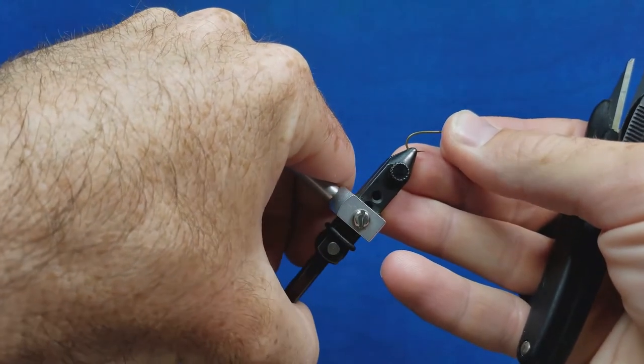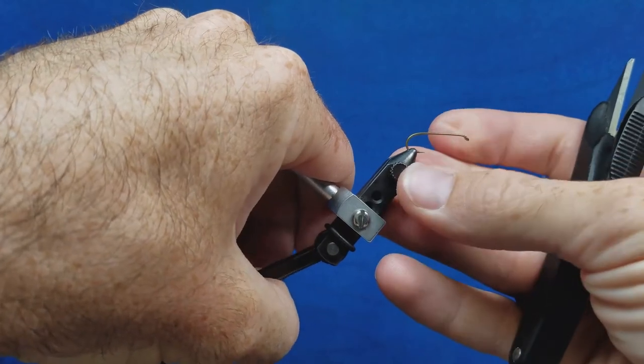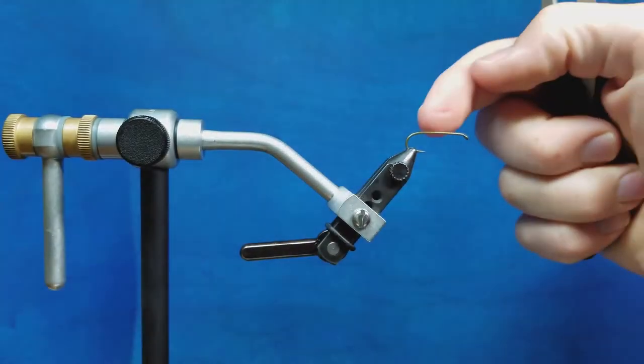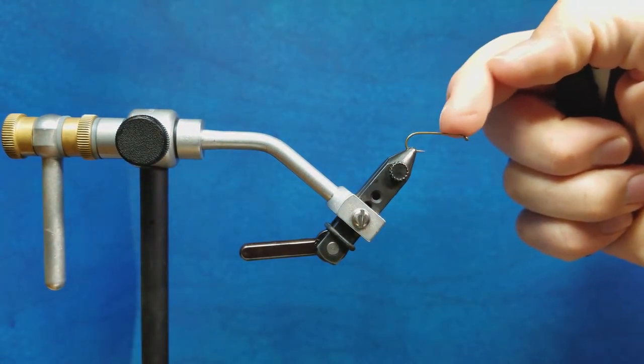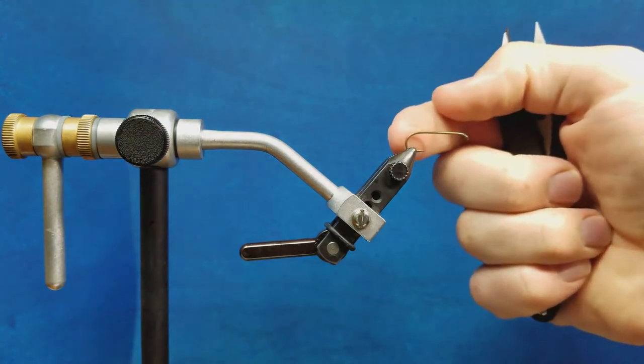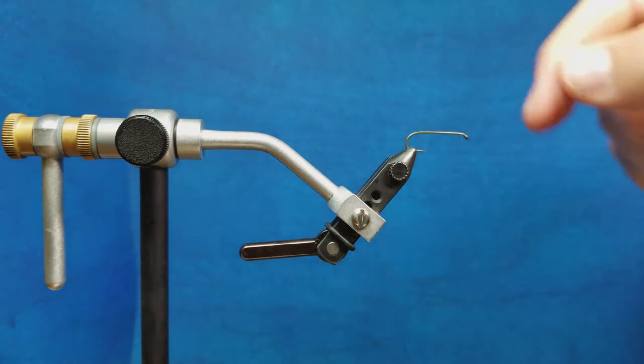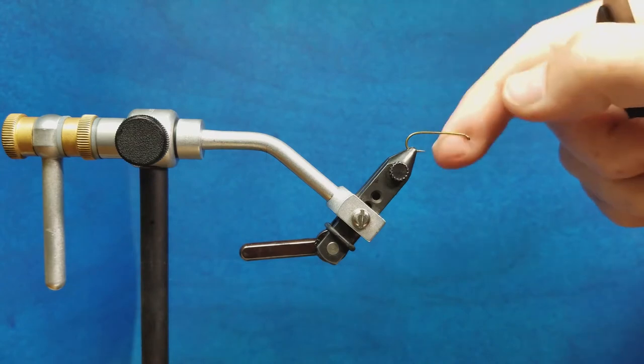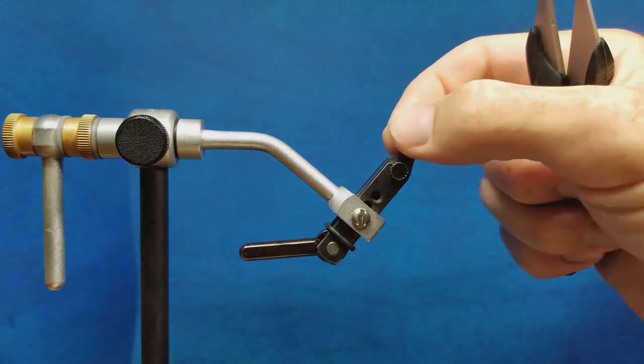When I secure this, I want to try to ensure that the stem or the shank of the hook is fairly level across the top. And I want to position this hook far enough forward so that it's easy for me to wrap and work materials all the way back to the bend.